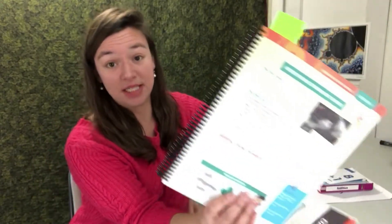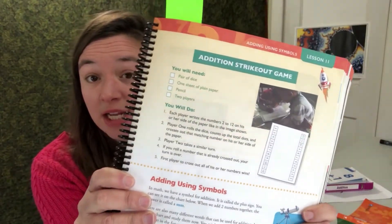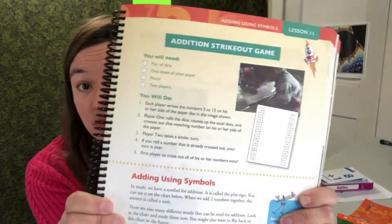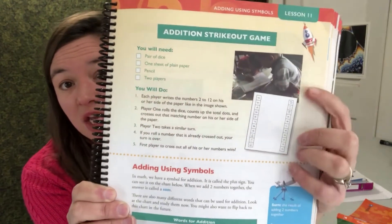So, that's flashcards. Another thing that you can do is revisit some of the games that they learned in their lessons. So, when they first learned addition, a lot of the opening activities were fun games that you can play again. For instance, this is addition strikeout. Let me try to hold it. It's a super simple game.